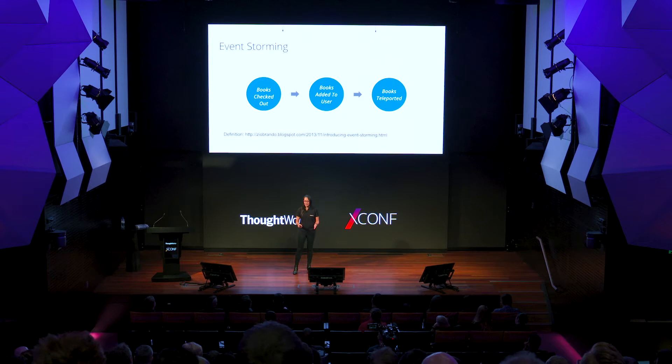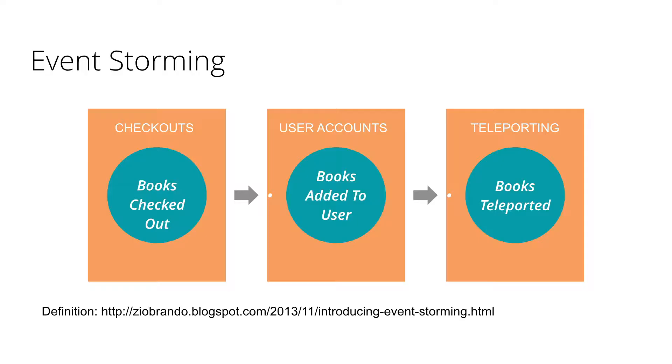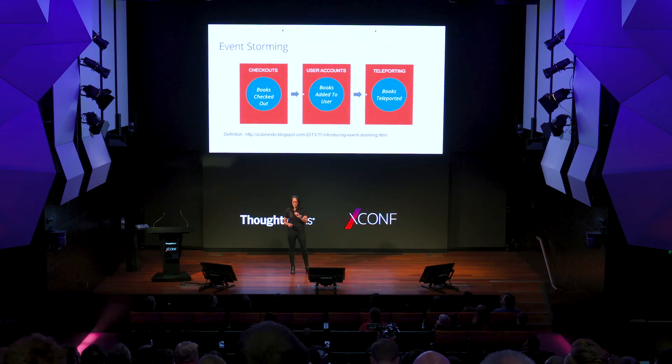These map to real things happening. A domain event is something that happened — it's always in the past. In the event storming workshop you can also identify who did it, when, at what trigger, and what data is associated. For example: user checks out books, a librarian would add to the system which books the user had. You can also identify your bounded contexts or sub-domains — for us: checkout, user accounts, and teleporting.